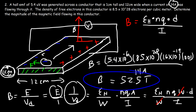Now you know how to use the Hall effect to measure the magnetic field passing through a conductor. You measure the voltage and can determine the thickness of the conductor directly. By keeping a constant current flowing through the circuit and knowing the number of free electrons per cubic meter — which you can determine experimentally — you can calibrate the device and use it to measure any magnetic field.